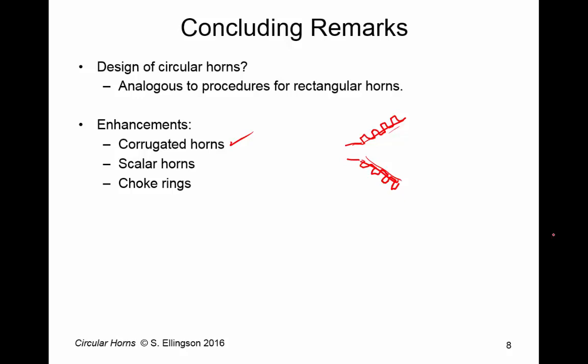Other possibilities include the scalar horn and choke rings. And these are techniques that you can apply to primarily the circular horns, but they can also be applied to some extent to rectangular horns. And they're attempts to modify the boundary conditions along the horn walls and outside the horn aperture to create patterns which are better suited to the specific problem.